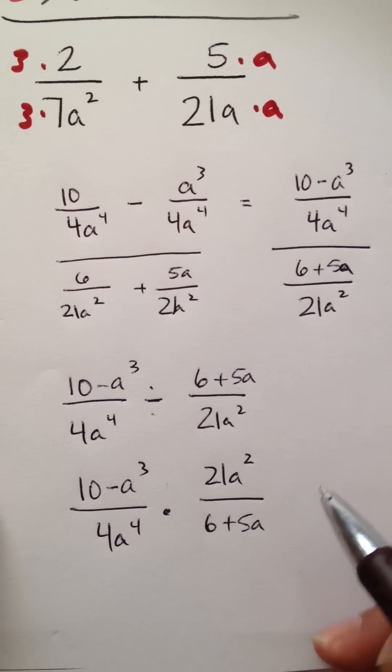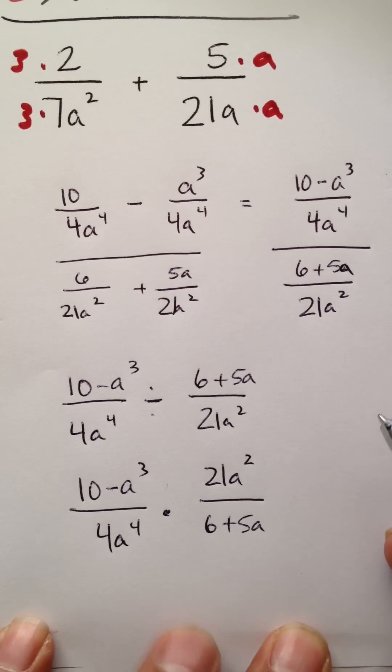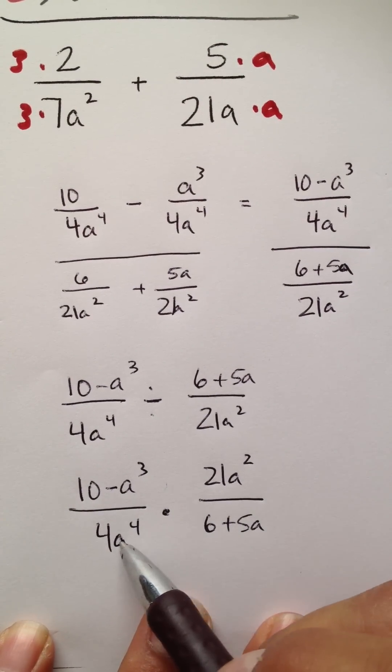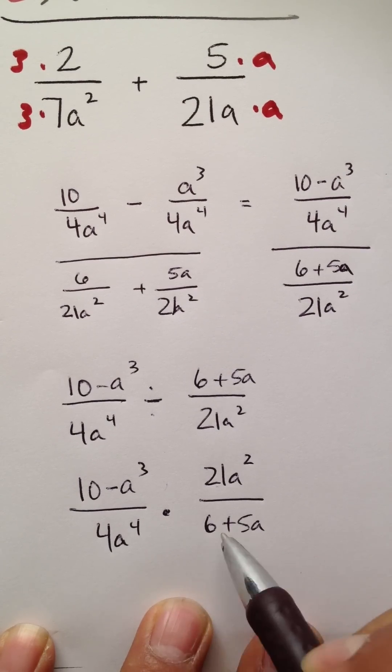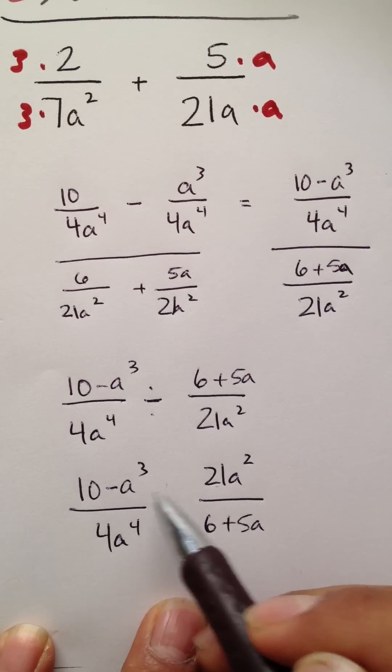What happens now is that these get to be simplified. And so, you can't factor out here, you can't factor out here.